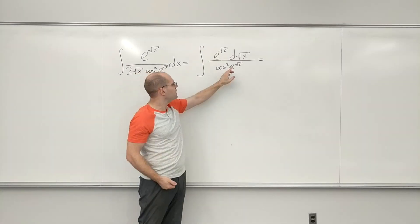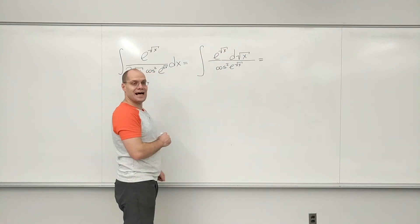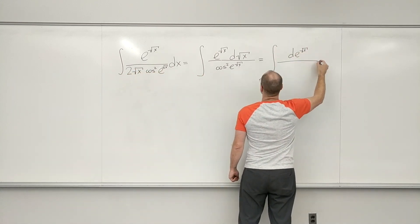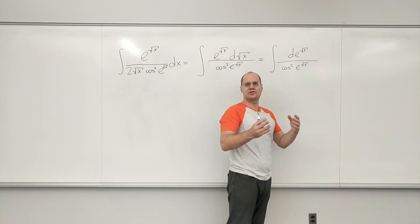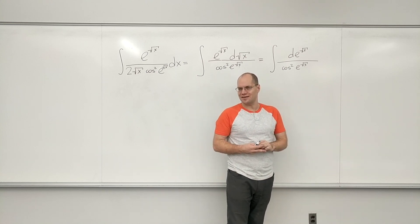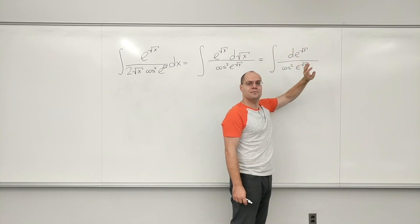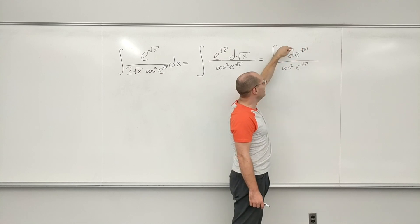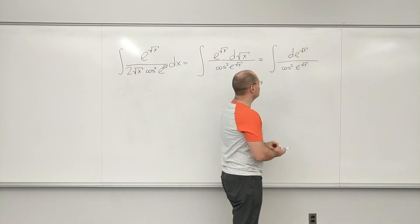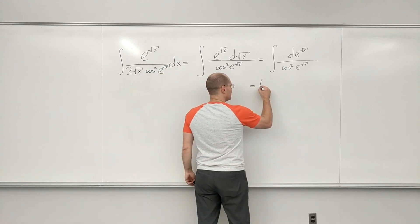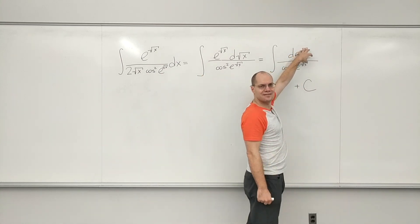Recognizing this as the derivative of e to the square root of X, I'm going to shove that under the d-symbol. Now, just to be more comfortable, imagine this being a different letter like u — then you have du over cosine squared of u, and that's clearly tangent of u plus a constant. So you're basically done. The only thing you really have to retrain yourself to do is to see this symbol as just one thing, like any other letter.